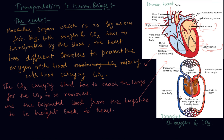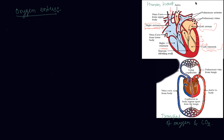The separation between the left and right sides of the heart keeps oxygenated and deoxygenated blood apart. This separation allows a highly efficient supply of oxygen to the body, and is especially useful in animals that have high energy needs, such as birds and mammals.